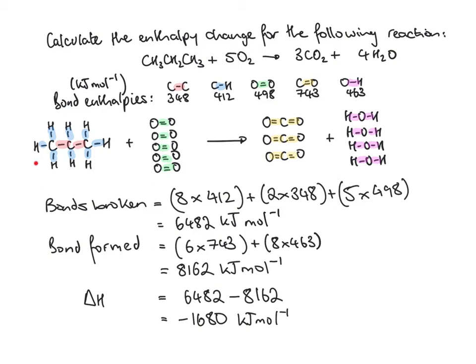The key thing to help you get to grips with this area is to draw out the molecules wherever possible, because you'll see much more clearly the number of each type of bond. One difference between GCSE and A level is that at GCSE they pretty much drew the structures out for you, whereas at A level you're simply given the reaction and you have to think carefully about the number of each type of bond. Drawing the structures out takes the load off, just like it did at GCSE.